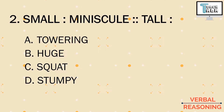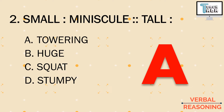Number two: small is to minuscule, tall is to blank. In the first pair of words, small and minuscule are synonyms — they mean the same or have similar meanings. Small means little or tiny, and so does minuscule. Using this relationship, what is synonymous to the word tall? Is it a) towering, b) huge, c) squat, or d) stumpy? The answer is letter a) towering. When we say towering, like towering heights, it refers to a very tall structure or building.